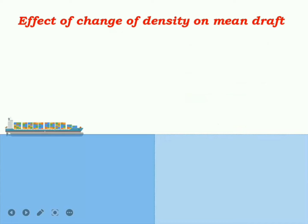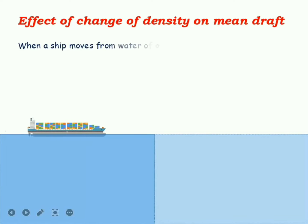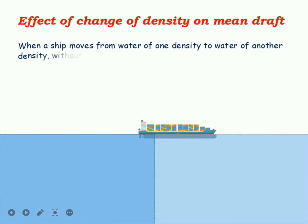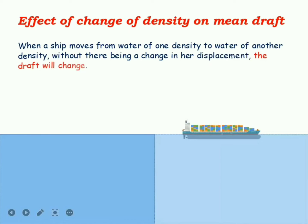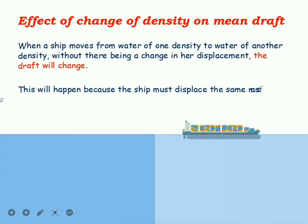Whenever a ship moves from water of one density to another without a change in its displacement, the mean draft must change by a certain amount. This change in mean draft is quite small most of the time, but it must still be considered in calculations regarding ship stability, because the ship is displacing an equal mass of water in both cases.